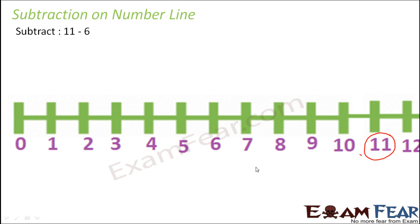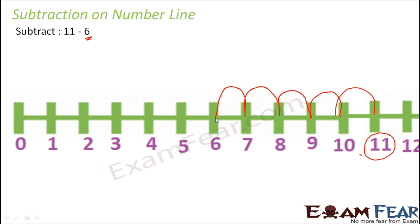Now in this case, we are subtracting something — we are reducing something from 11. So basically we are going towards a smaller number. Since we are subtracting 6 from 11, the result is going to be something lesser than 11. So this time we will move towards the left hand side, and we will make 6 jumps: 1, 2, 3, 4, 5 and 6. Six jumps from 11 — and where do we reach? We reach at 5.